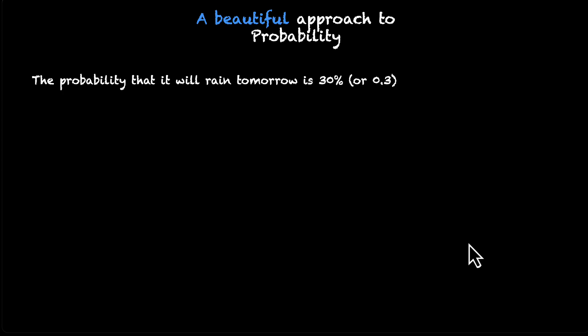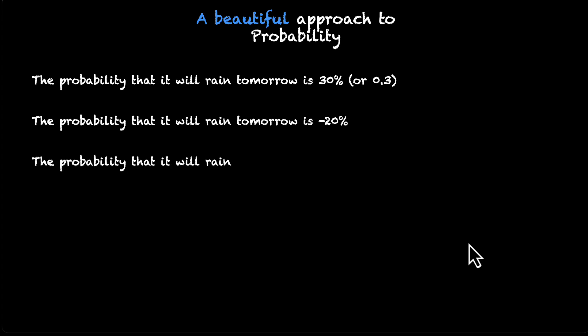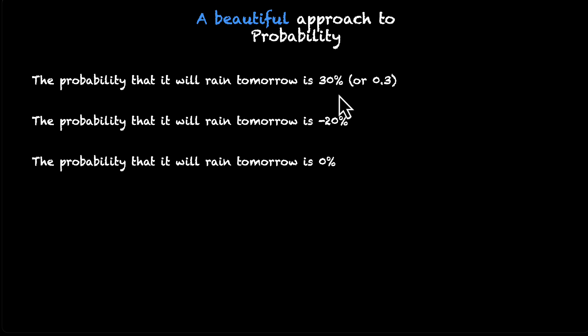The first statement: the probability that it will rain tomorrow is 30% or 0.3. Let's look at this one. It's going to rain tomorrow and the probability is 30%. 30% is not a great number — there's more chance that it will not rain than it will rain. But it's still making sense. So the first statement makes sense.